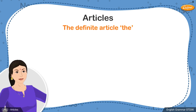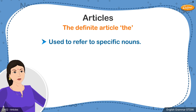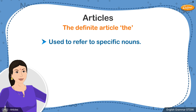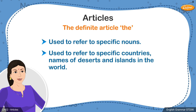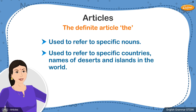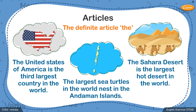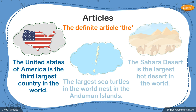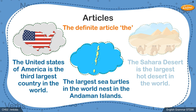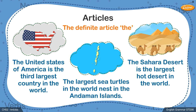The is the only definite article. It is used to refer to nouns that are specific — if both you and the person reading or listening know what you are referring to, or if what you are describing is common knowledge, then you must use the definite article. It is used to refer to names of specific countries, deserts, and islands. For example: The United States of America is the third largest country in the world. The largest sea turtles in the world nest in the Andaman Islands. The Sahara Desert is the largest hot desert in the world.